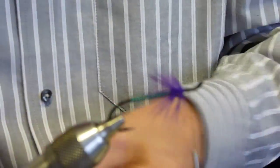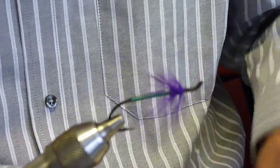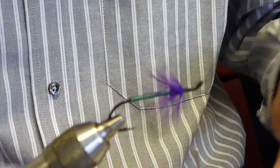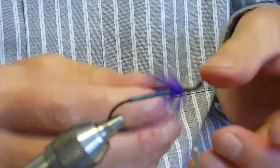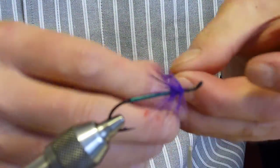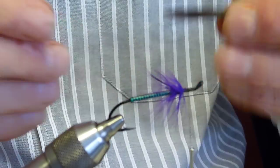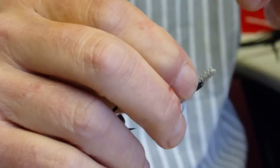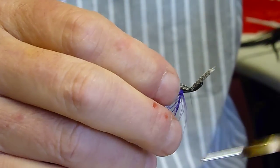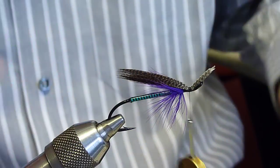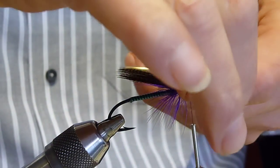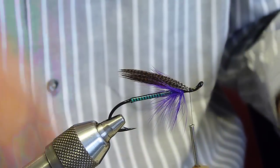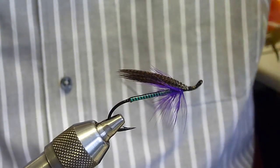Then to finish it off though, we've just got to put the wing. The wing on this one is bronze mallard. So we get the bronze mallard, fold in once, fold in twice, setting them in. Trim off the waste and just build the head up.